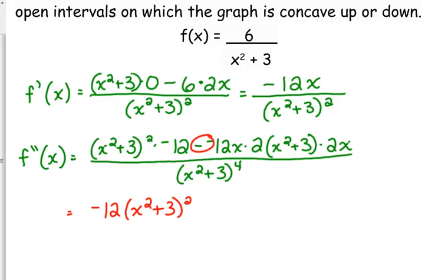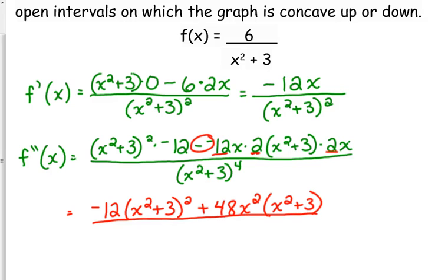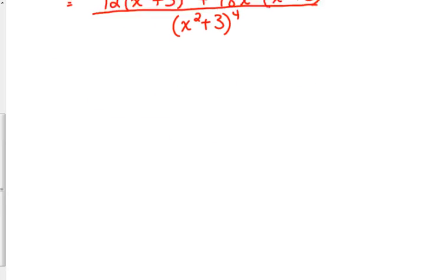A negative minus a negative is the same as adding a positive. We've got 12 times 2 times 2, so that's 12 times 4, which is 48, and x times x is x squared. That made it look a lot nicer, but there's still a little bit we can do — we're going to need to do it when we set this equal to 0.